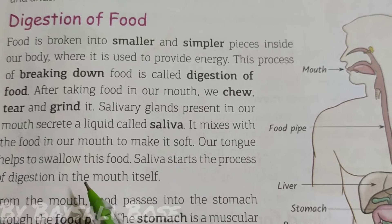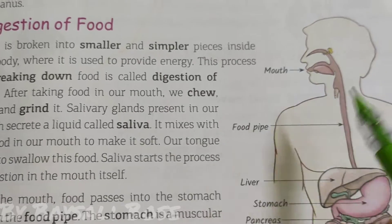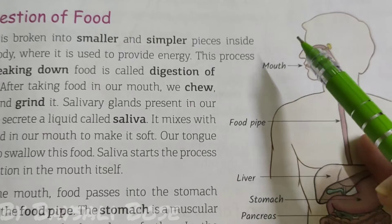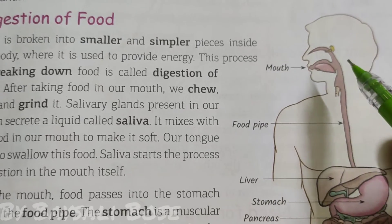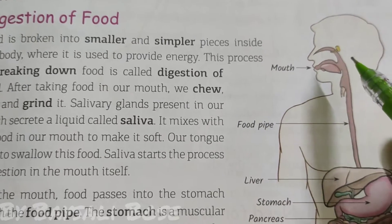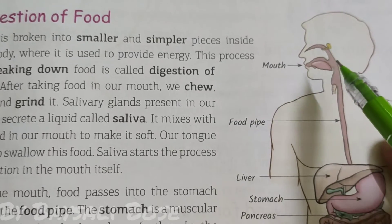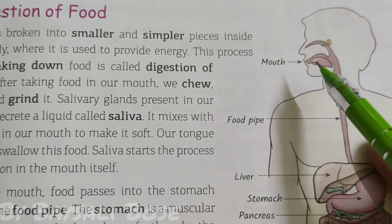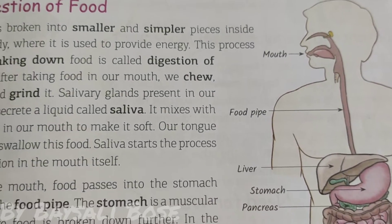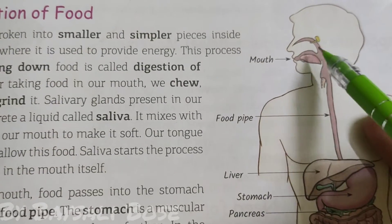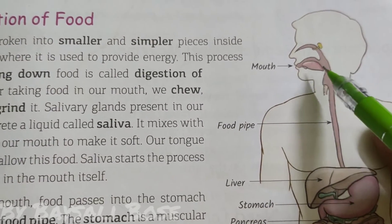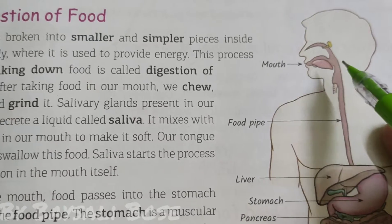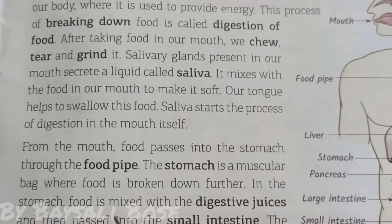Saliva starts the process of digestion in the mouth. All the breaking of food into simpler and smaller particles is done in the mouth by the teeth, and the swallowing is done by the tongue.